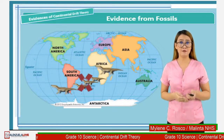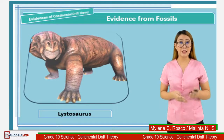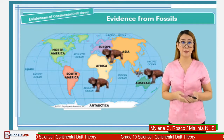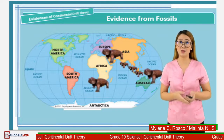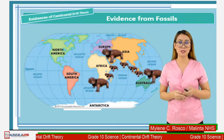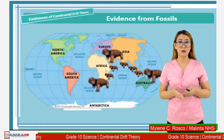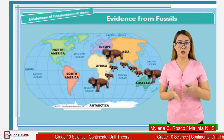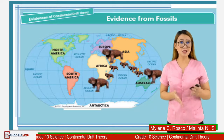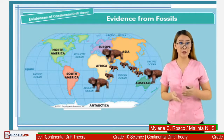The third fossil evidence is the Lystrosaurus. Lystrosaurus are found in the continents of Africa, as well as in India and Australia. Similar to the other fossil animals, Lystrosaurus could not migrate or travel from one continent to another. These are important fossil evidences of animals that Wegener discovered.